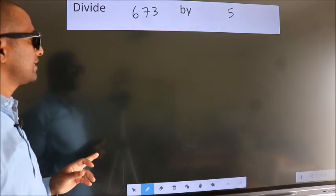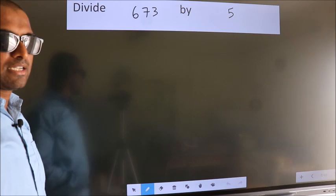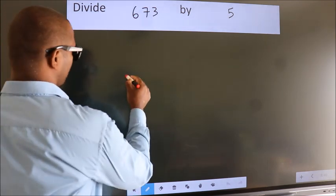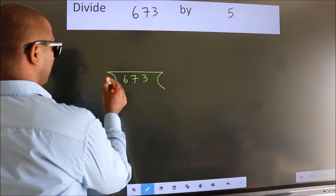Divide 673 by 5. To do this division we should frame it in this way. 673 here, 5 here.